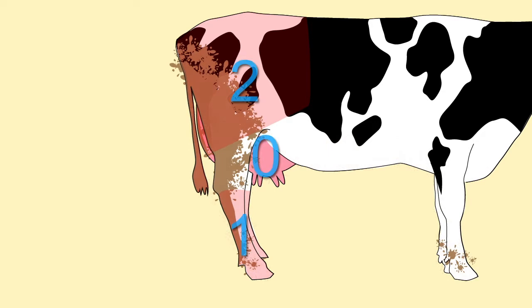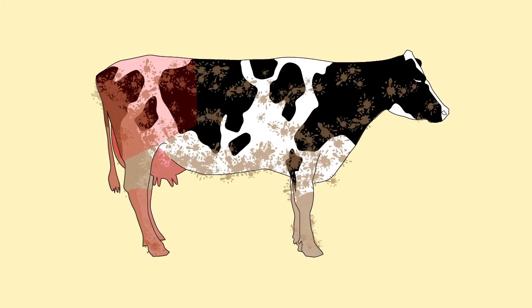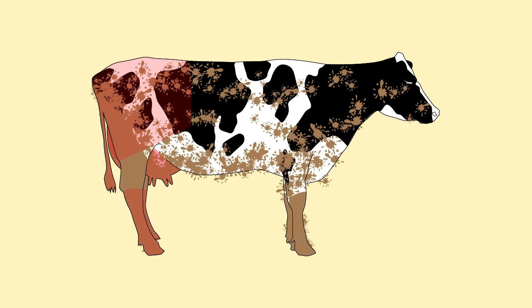If it is around the tail and the flank where the tail swishes, is it a problem with diarrhea? Is there a problem with the diet? If the dirtiness is all over, is there perhaps a problem with overcrowding or manure removal?